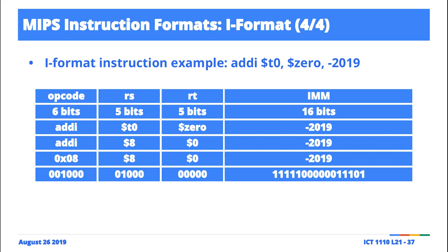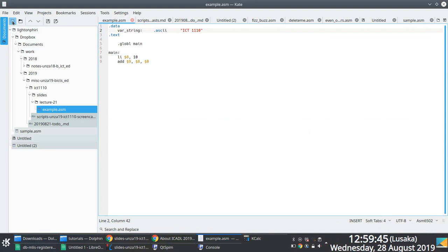Since after execution the immediate value sits in a register, do all registers have the same capacity? Yes — 32 bits. We've said this for MIPS. When dealing with an immediate value, the register can hold 32 bits but the immediate is only represented using 16 bits in the instruction, so you must compensate. It's sad that we spent the entire lecture discussing I-format instructions, but I guess it's worth it.